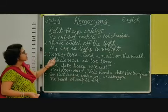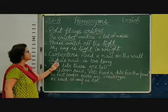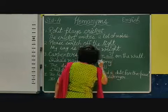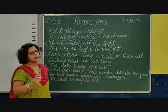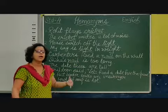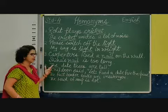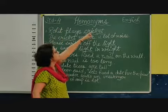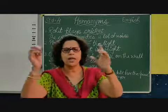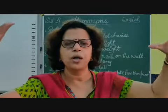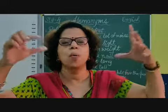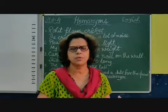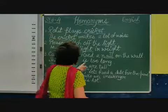Coming to the third one: 'The carpenter has fixed a nail on the wall' and 'Sheena's name is too long.' Which word is common in both sentences? Immediately you will say it is 'nail.' Yes, it is nail — N-A-I-L. The pronunciation is naturally the same, but the meanings are different. You must be seeing nails in your house; when you are fixing a showpiece or a clock on the wall, or even fixing furniture, you use nails. So that is the nail.